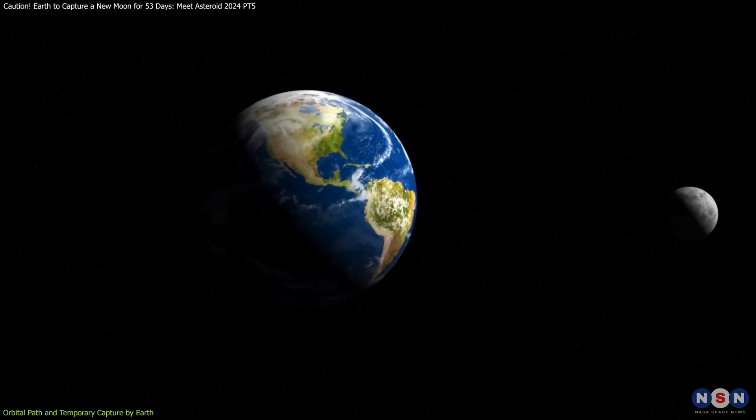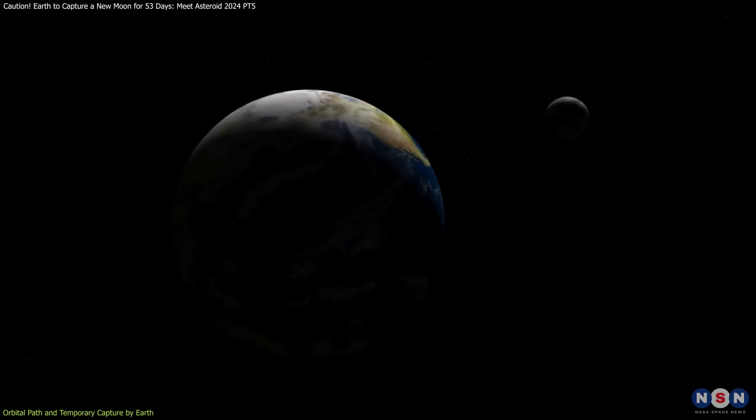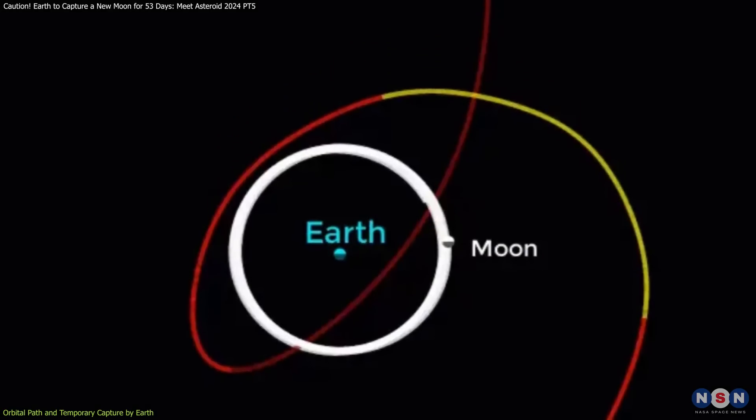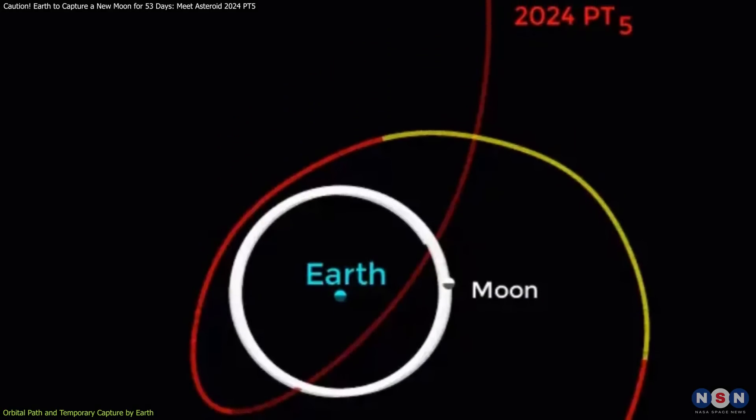However, unlike our permanent Moon, which is locked in a stable orbit, these mini-moons are often in highly elliptical orbits, and their stay is fleeting.